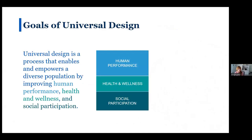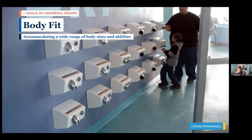Now we'll move on to the goals of universal design. To accompany the new definition, we developed eight goals of UD. Each one embodies a clear outcome accompanied by an example spanning many domains of design practice. Using goals creates clear outcomes that the public and design professionals can aim to achieve. Those goals are derived from the definition and categorized into three improvement areas: human performance, health and wellness, and social participation.